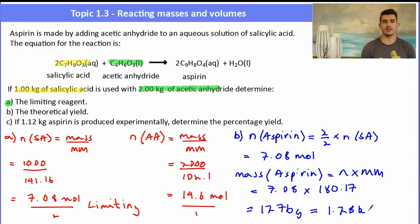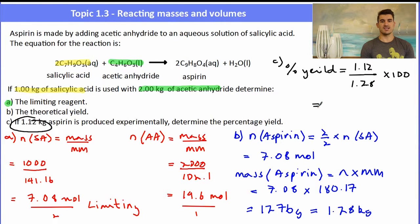For part C, it says if 1.12 kilograms of aspirin is produced experimentally, determine the percentage yield. So our percentage yield would be our amount produced experimentally, 1.12, divided by our theoretical yield, 1.28, multiplied by 100, giving us the percentage yield of 87.5%.